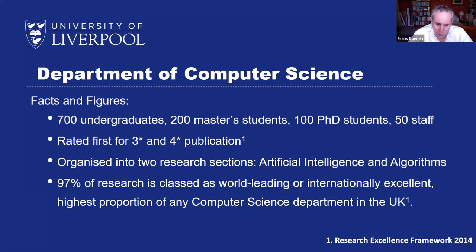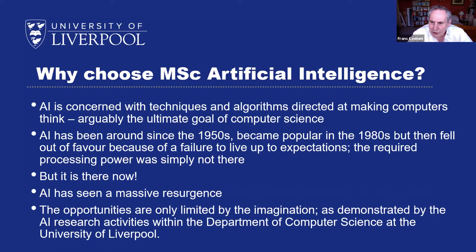The department with its 50 staff is divided into two research pillars: algorithms and artificial intelligence. Artificial intelligence is one of our priority areas and has been for a long time — one of the things we believe we are very good at. AI is concerned with techniques, algorithms, processes, and tools for making computers think. Arguably the reason we're in the domain of computer science is that we want to create machines that can think — that's kind of the end goal.